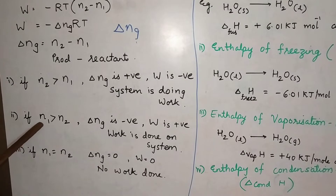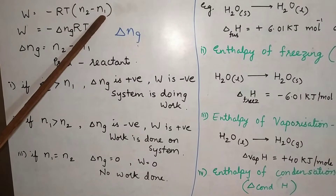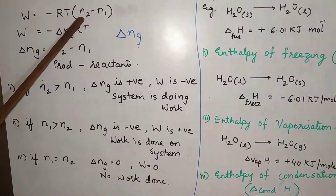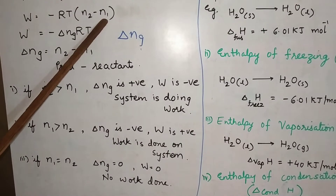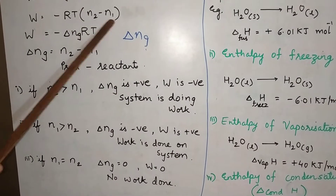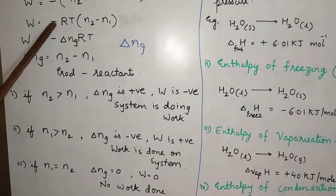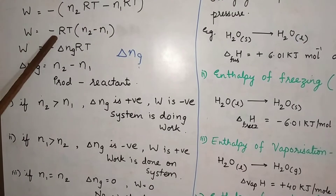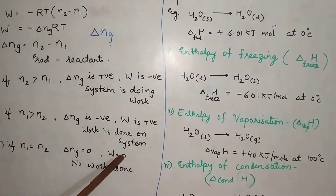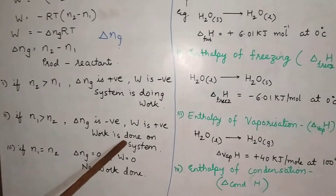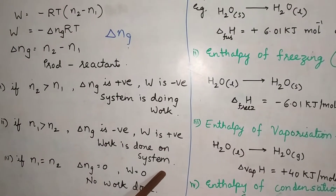In the second case, if N1 is greater than N2, then delta Ng will be negative. Because minus into minus becomes plus, W will be positive. So when delta Ng is negative, W is positive. This indicates that work is done on the system — the surroundings are doing work on the system. This corresponds to compression.